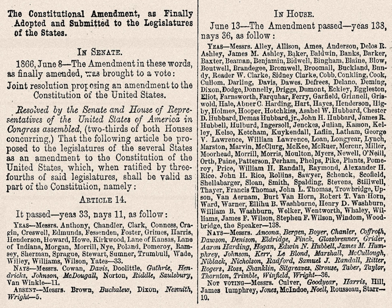Section 4: The validity of the public debt of the United States, authorized by law, including debts incurred for payment of pensions and bounties for services in suppressing insurrection or rebellion, shall not be questioned. But neither the United States nor any state shall assume or pay any debt or obligation incurred in aid of insurrection or rebellion against the United States, or any claim for the loss or emancipation of any slave; but all such debts, obligations and claims shall be held illegal and void. Section 5: The Congress shall have power to enforce, by appropriate legislation, the provisions of this article.